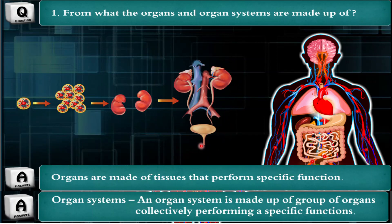Different organs make an organ system. Here is a respiratory system shown. So this way, from cell we get the next level of organization — tissue level. From tissue level, we get the next level, that is organ level, and then organ system.